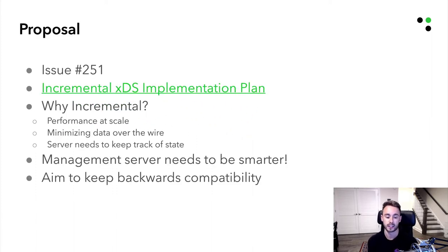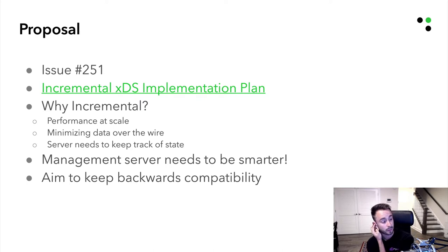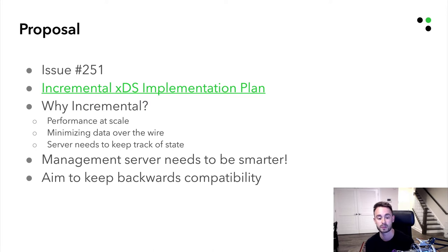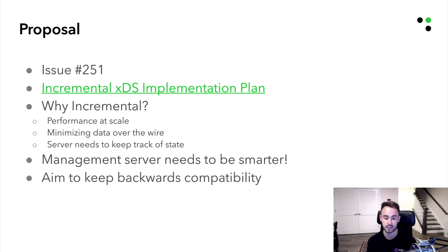I have linked the initial incremental XDS implementation plan — our upfront planning document — in case anyone wants to read it. I'd like to thank the team at Lyft and Go Control Plane for the feedback they provided and the help they gave me to work through the design, think about edge cases, failure scenarios, and things like that. The main features we set out to achieve were performance at scale: minimize data over the wire, make the management server smarter with state management, and maintain backwards compatibility so as not to break users' code that has inherited Go Control Plane as an upstream resource.